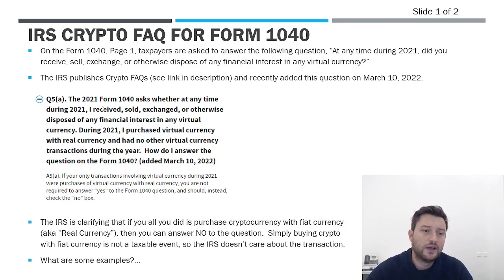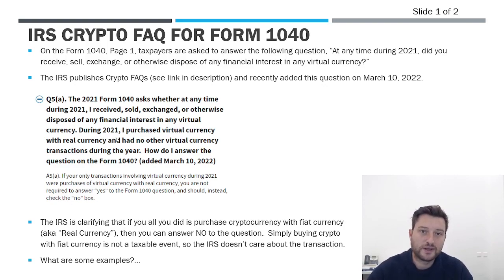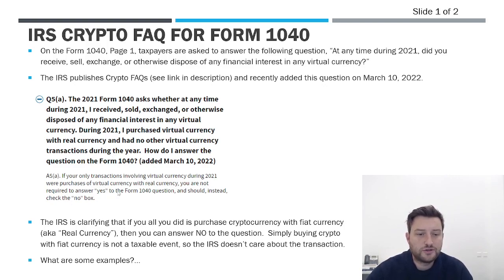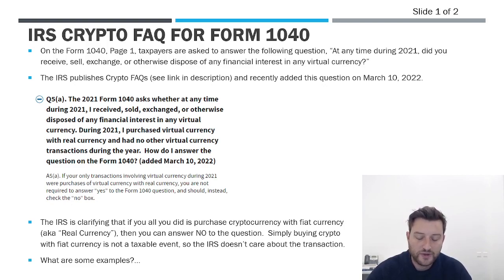The question in the FAQ says: the 2021 form asks whether at any time I received, sold, exchanged, or otherwise disposed of a financial interest in any virtual currency. During 2021, I purchased virtual currency with real currency and had no other virtual currency transactions during the year. How do I answer this question? The answer from the IRS is: if your only transactions involving virtual currency were purchases of virtual currency with real currency, you are not required to answer yes — in that case, you would answer no.